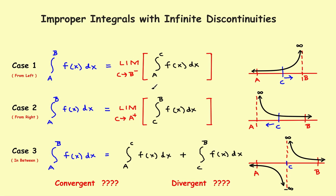This is part 9 of the series on improper integrals. In this series we'll look at improper integrals with what are called infinite discontinuities. We'll look at a case 2 problem, where we have an asymptote on the left-hand side of the interval and the function approaches infinity.